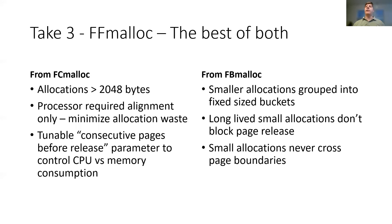Our final solution merges together ideas from FCMalloc and FBMalloc into a single allocator. For larger allocations, we utilize a bump pointer scheme to avoid over-allocation waste. We also kept the batch page management routine, and the minimum pages before release value is our main performance tuning value. Smaller allocations are allocated from fixed size bins. This keeps small allocations together, preventing small long-lived objects from holding up page release in the bump pointer region.